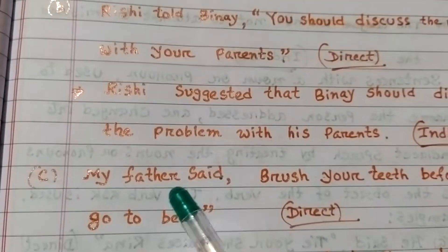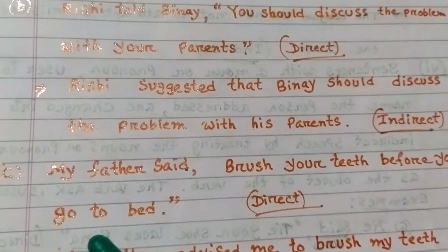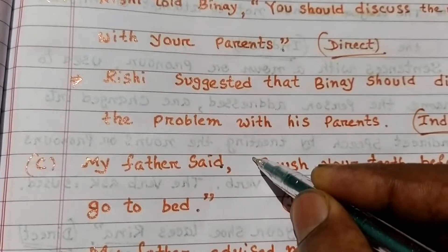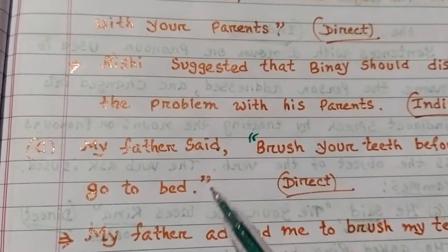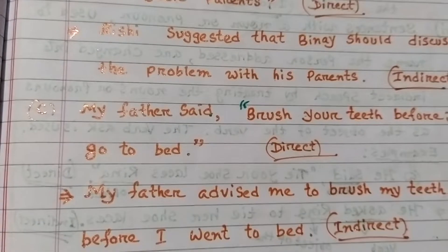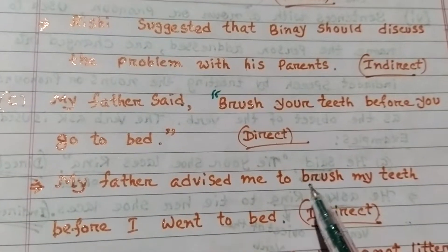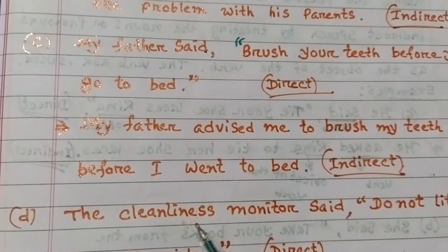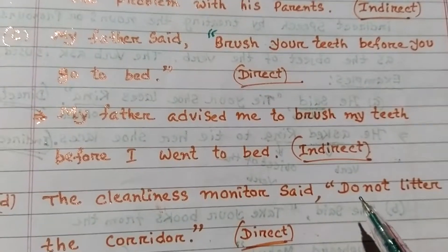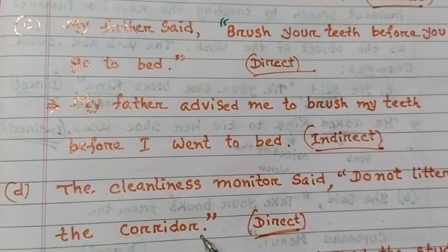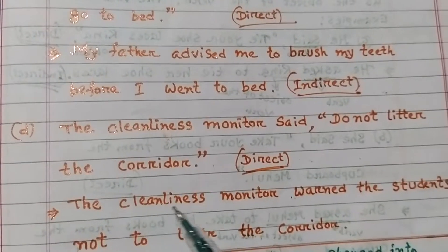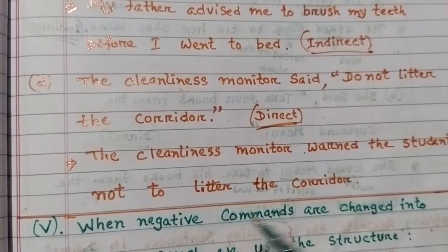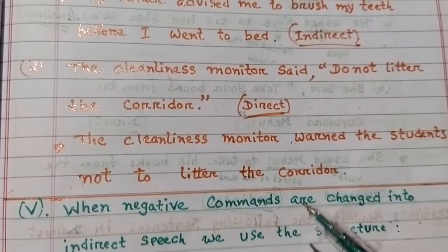Example: Direct speech — 'My father said, brush your teeth before you go to bed.' In indirect speech: 'My father advised me to brush my teeth before I went to bed.' Another example: Direct speech — 'The cleanliness monitor said, do not litter the corridor.' In indirect speech: 'The cleanliness monitor warned the students not to litter the corridor.'